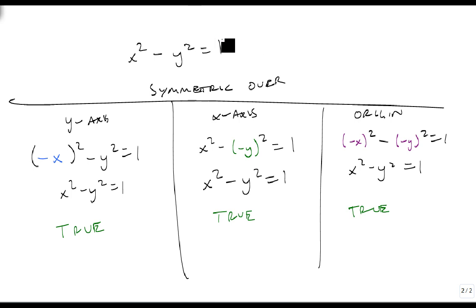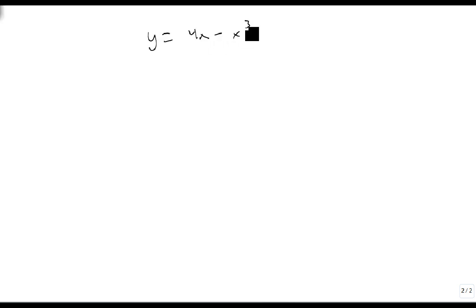This particular equation is symmetric over all three. As we deal with symmetries, it doesn't really matter which one we look for. Notice that if an equation is symmetric over both the x-axis and the y-axis, it tends to also be symmetric over the origin. But there are times where you might get an equation like y = 4x - x³.